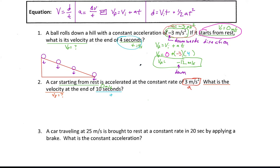Hopefully this looks familiar compared to the problem above. I know a time, but that doesn't really narrow anything down because all these formulas deal with time. I know I have an acceleration, which narrows it down to either the middle formula or the final one. And it's asking for a final velocity — the last formula only has initial velocity, not final velocity. So since I'm looking for final velocity, there's really only one formula that deals with that. I'm going to use the same formula as above. Yes, I'm still going to write out the formula, because it helps with clarity.